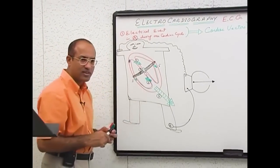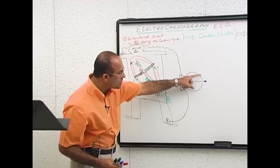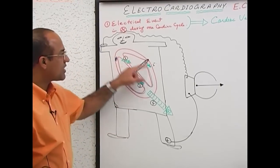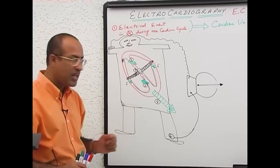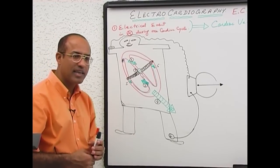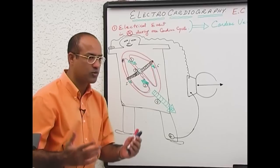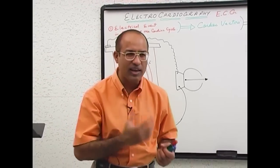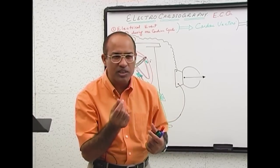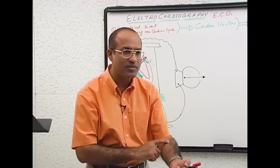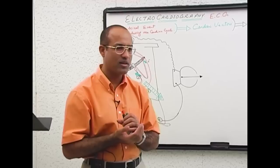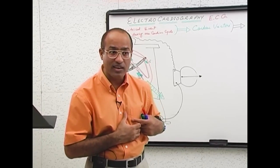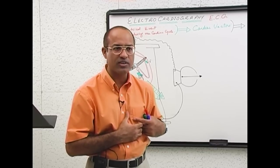So the same galvanometer we have applied to this person and we want to see what type of needle fluctuations are produced by the electrical activity of the heart. Because during one cardiac cycle, electrical vectors are produced due to electrical events. And these electrical vectors and electrical potentials are very faithfully conducted to the body surface through the body fluids — they produce very miniature voltages up to the skin. The body is a very good volume conductor.